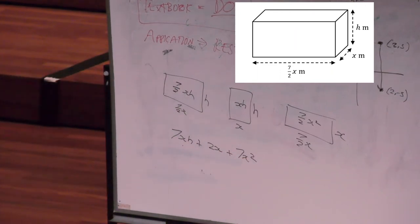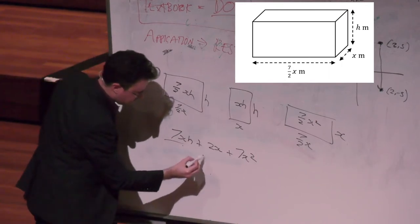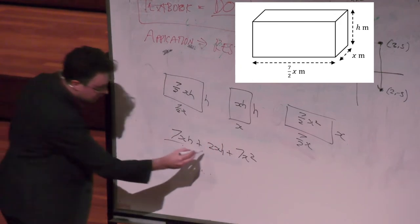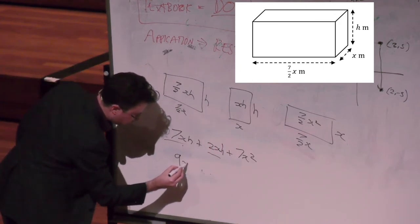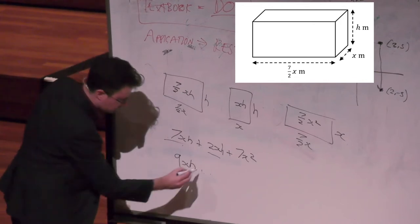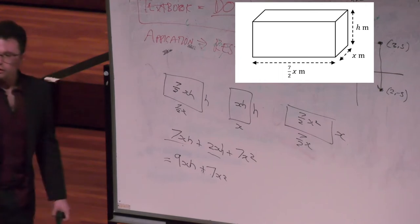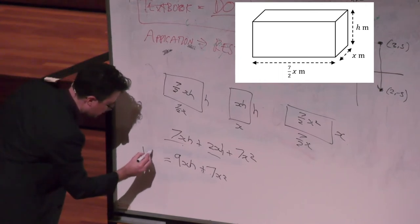How's this making sense so far? Good. You've got 7xh's and you've got 2xh's. You add them together. This will give you 9xh's plus 7x squared. And all of this is the surface area, right, which is 1,080 metres.